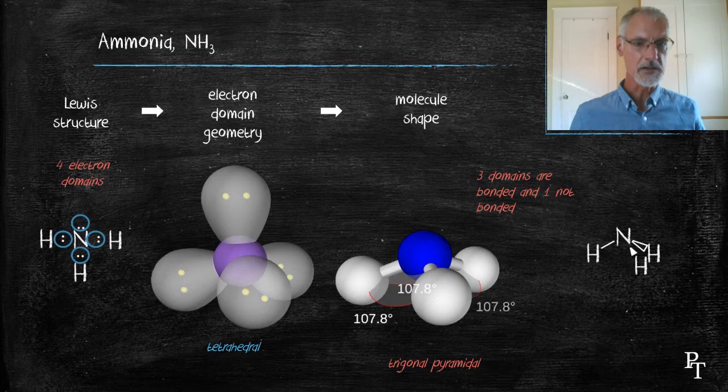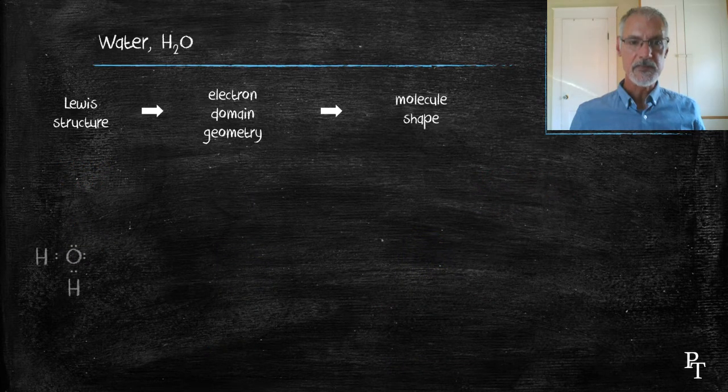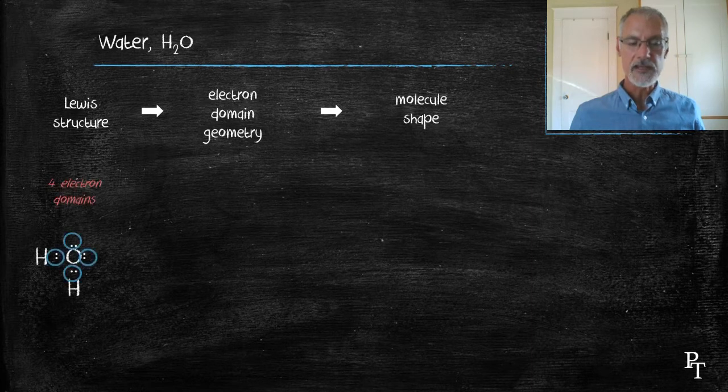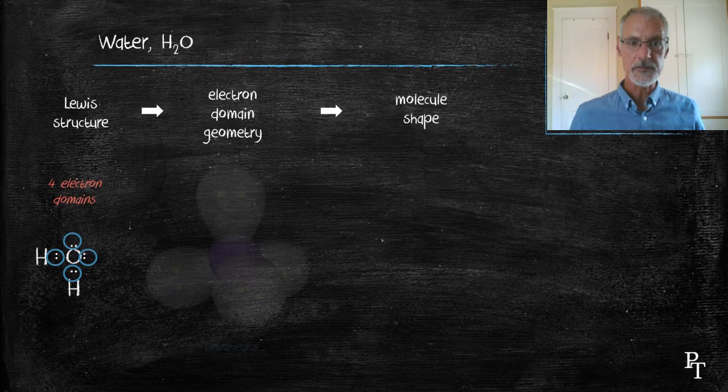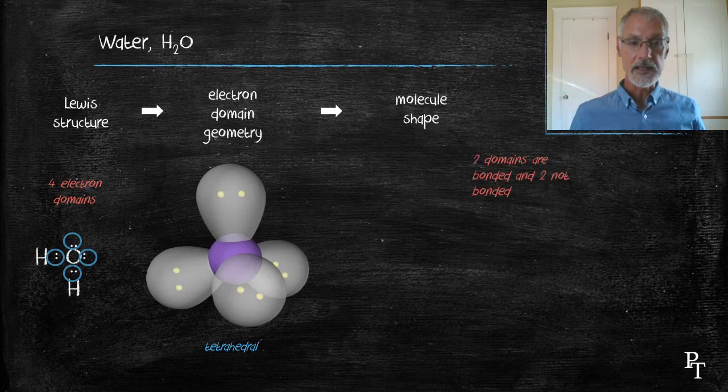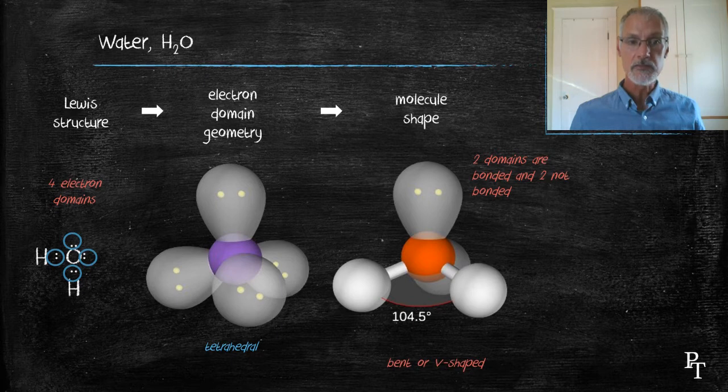Let's look now at the water molecule. Again, Lewis dot diagram and identify the number of domains. Four domains. So again, I'm beginning with a tetrahedral arrangement. Two are bonded, two are not. That gives me this picture. Again, you'll notice the bond angle has been reduced further. That is because there are two unbonded pairs of electrons squeezing down on that tetrahedral arrangement.